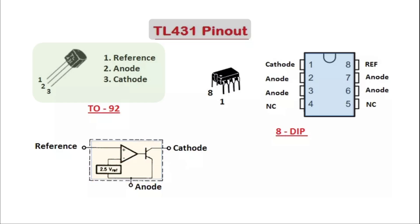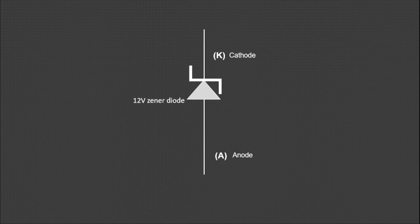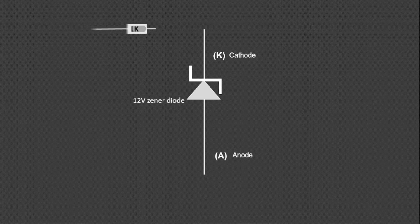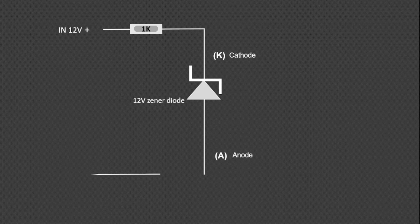Let's try to understand TL431 through a diagram. First, let's look at Zener diode. By placing a 1K resistor on the cathode of the Zener diode, we will give it 12 volts and ground the anode.